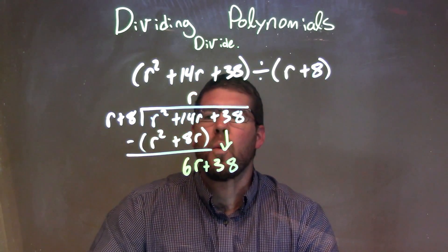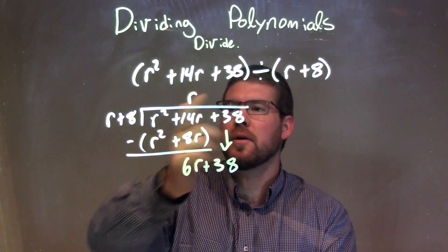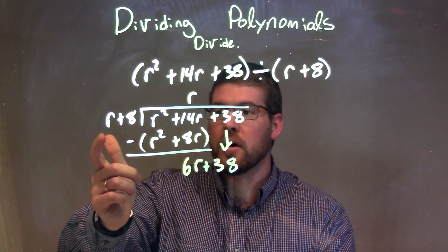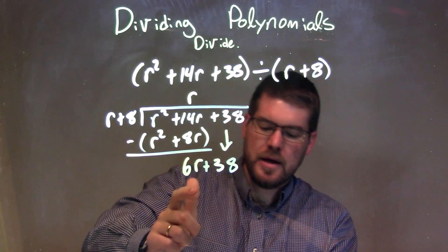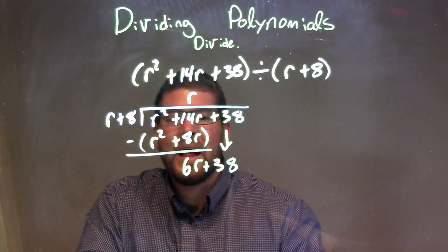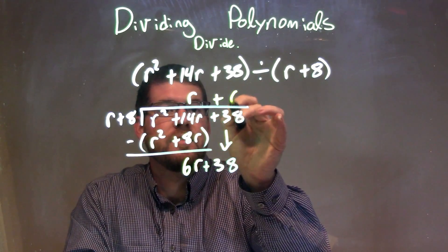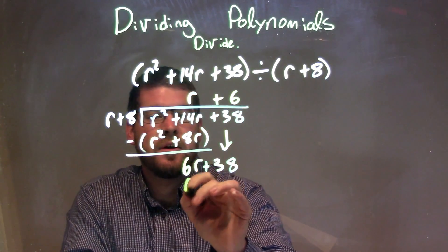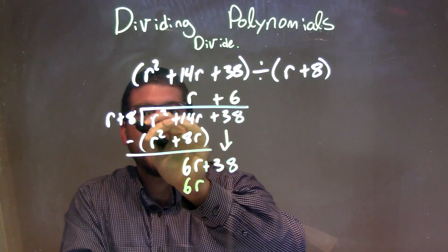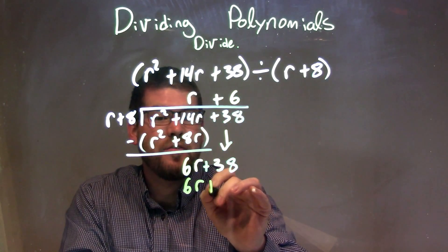So now we ask, what times r gives me 6r? Well, that's just going to be a 6, right? So we have a plus 6 there. So 6 times r is 6r, and 6 times 8 is 48.